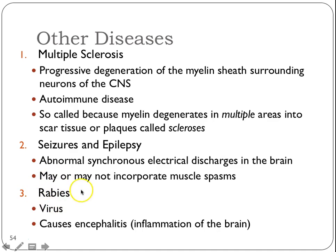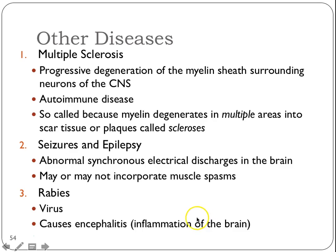Rabies is a virus — it's small and can get across the blood-brain barrier. What ends up happening is it causes inflammation in the brain, and that inflammation crushes neurons. You've heard of rabid animals — they don't act right, don't walk right, frothing at the mouth. Because if you're crushing neurons, you can't function well — you're not thinking right, so behavior is very bizarre until finally the animal dies.